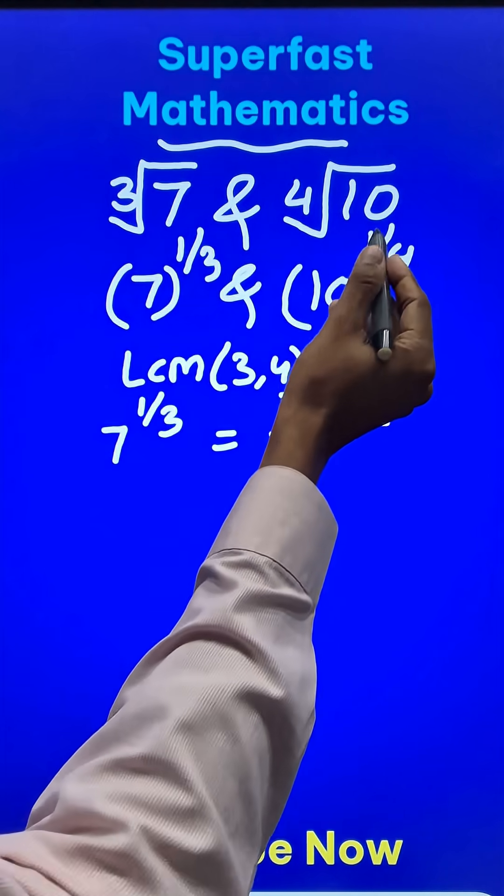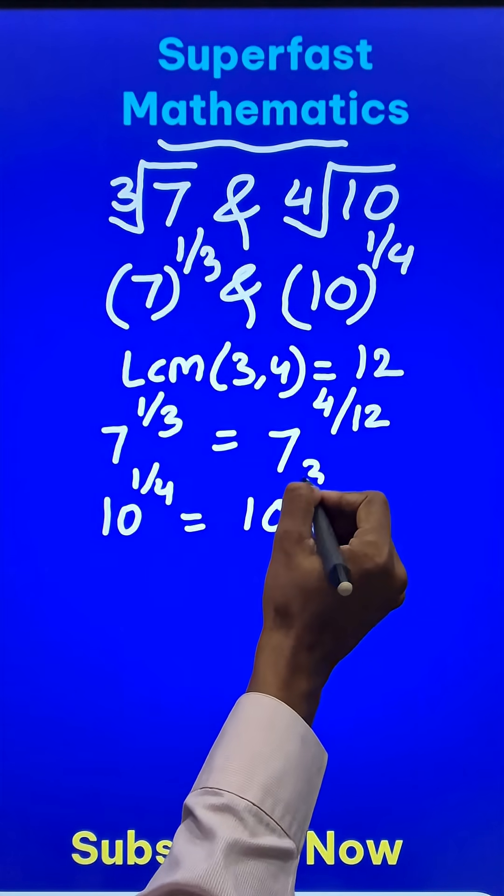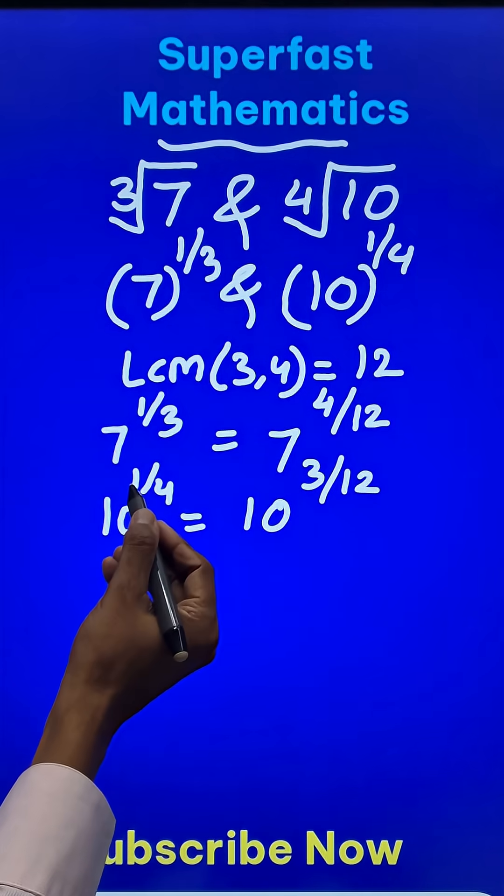And similarly, 10 raised to power 1/4 will be written as 10 raised to power 3/12, since 3/12 is again 1/4.